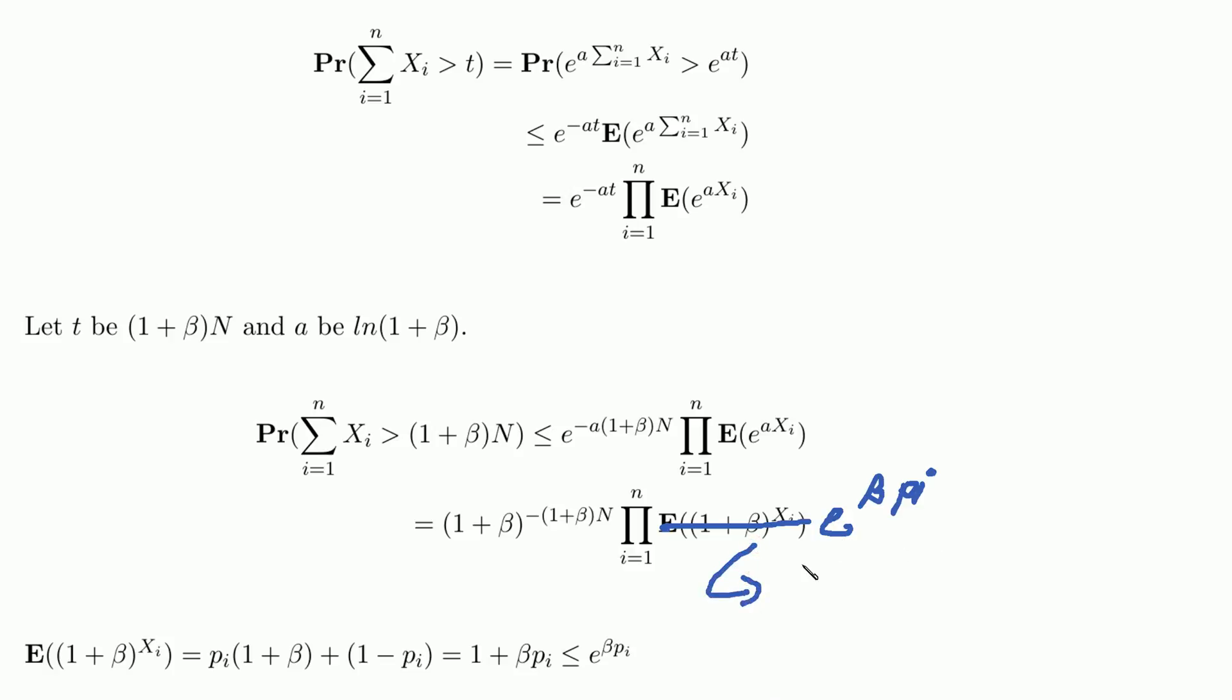We could have the following term in the exponent. Now beta isn't a variable in this summation, so we can just write it down like this.